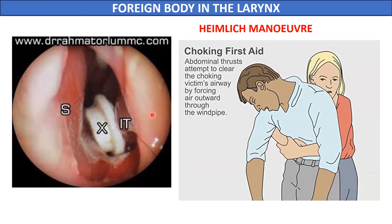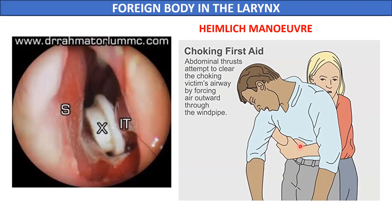If a foreign body enters the larynx, it must be immediately removed, as it can block the entry of air into the lower respiratory passages, causing asphyxia, cyanosis, or choking. To remove the foreign body, we can perform a life-saving procedure called the Heimlich manoeuvre. In this manoeuvre, we stand behind the patient and give strong abdominal thrusts, which push the residual air from the lungs forcefully through the trachea and the larynx, expelling the foreign body.